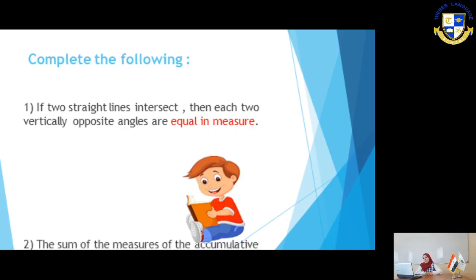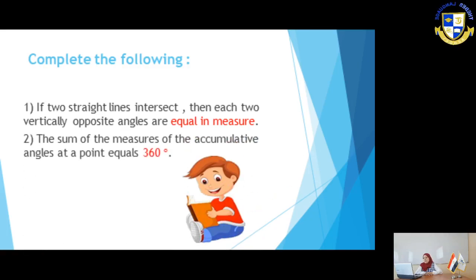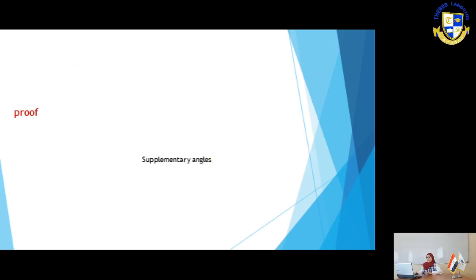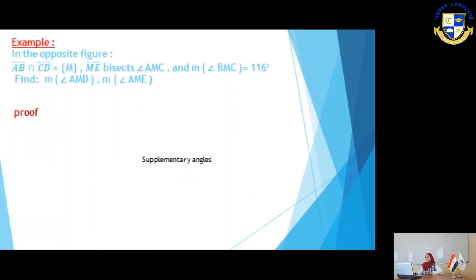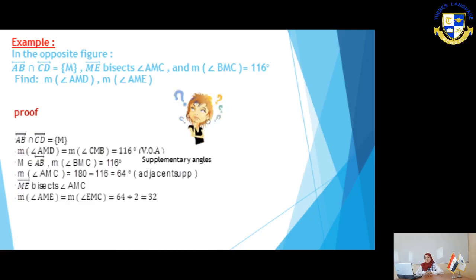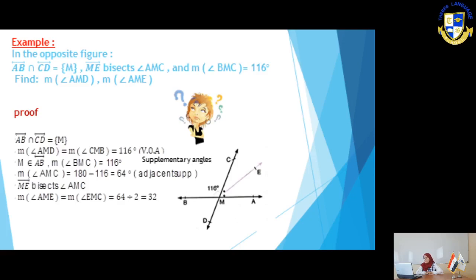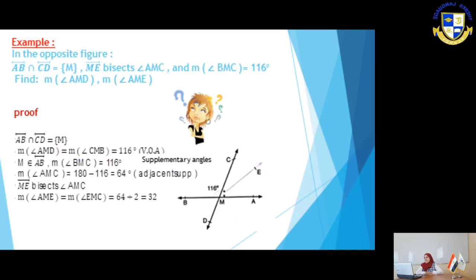We have an example. In the opposite figure, AB straight line intersects CD straight line at point M. ME bisects angle AMC, and measure of angle BMC equals 116 degrees. Find measure of angle AMD and measure of angle AME.